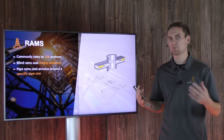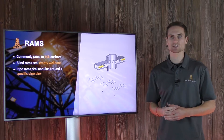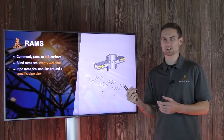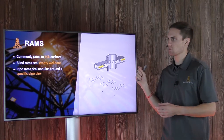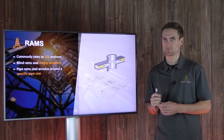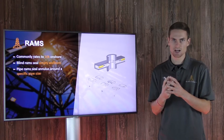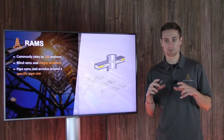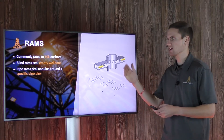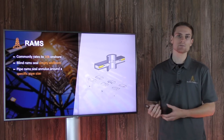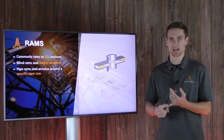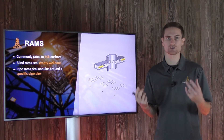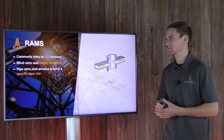The second type is pipe rams, which seal the annulus around the drill pipe or whatever pipe is in the hole — similar to an annular, but the difference is that it's for a specific pipe size. An annular can close around any size pipe, but pipe rams are set to a very particular diameter. That's why you'll sometimes have multiple pipe rams on a BOP stack — for example, one for drill collars and one for general drill pipe.